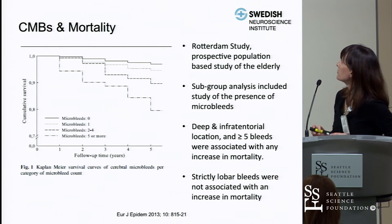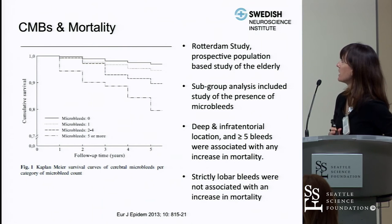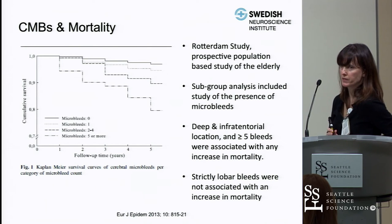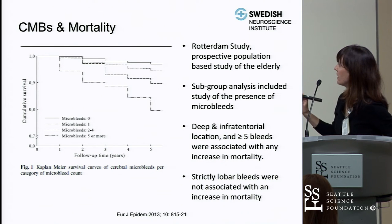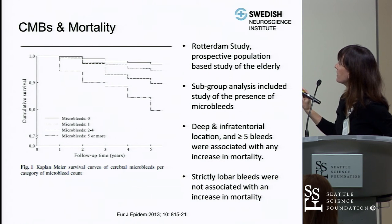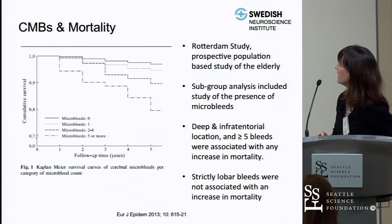Regarding clinical relevance: the Rotterdam study subgroup analysis found that deep and infratentorial microbleeds — associated with hypertension — and having greater than or equal to five microbleeds were associated with increased mortality. Survival rate decreased with increasing number of microbleeds over five-year follow-up. Interestingly, strictly lobar bleeds were not associated with increased mortality.